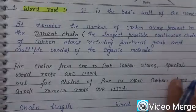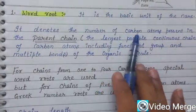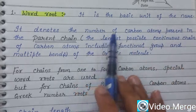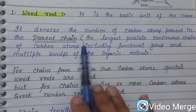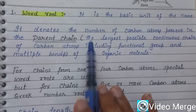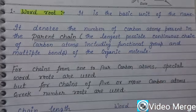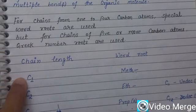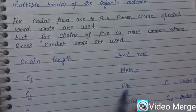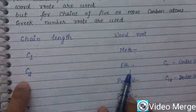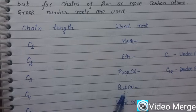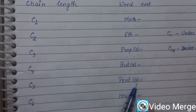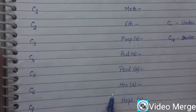First, we will discuss the word root. The word root is the basic unit of the name — it denotes the number of carbon atoms present in the parent chain. The parent chain is the longest continuous chain of carbon atoms including any functional groups and multiple bonds. If we have one carbon atom, the word root is 'meth.' For two carbons, it is 'eth.' For three, it is 'prop.' For four, it is 'but.' For five, it is 'pent.' For six, it is 'hex.'